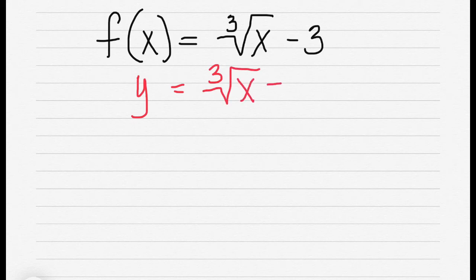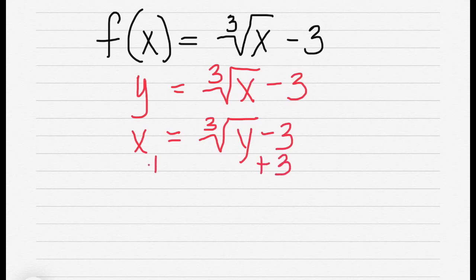Then we're going to switch our x and y, so we have x = ∛y - 3.